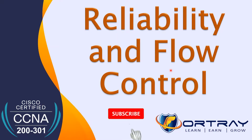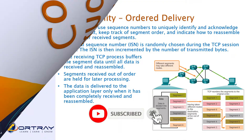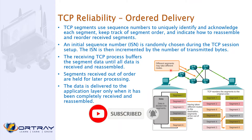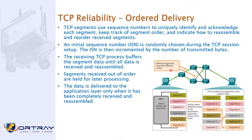How we can achieve reliability and flow control — that's the term we are constantly hearing. Reliability and order delivery: whenever a message is sent from the sender to the receiver, we always wait for acknowledgement. TCP segments use sequence numbers to uniquely identify each segment, keep track of segment order, and indicate how to reassemble and reorder the message on the other side. The initial sequence number is randomly chosen during the session.